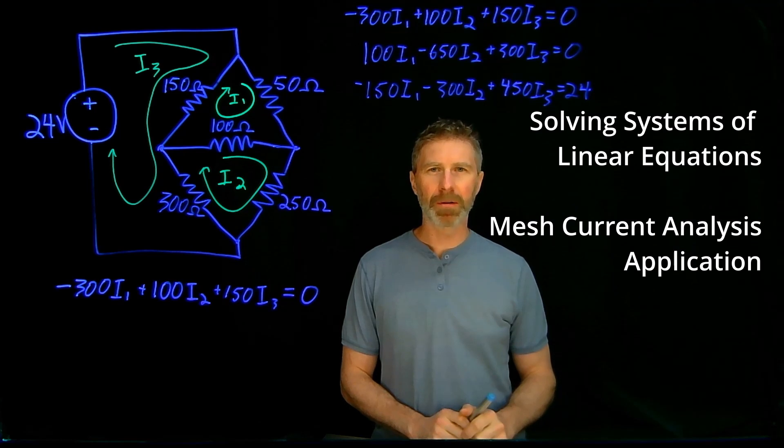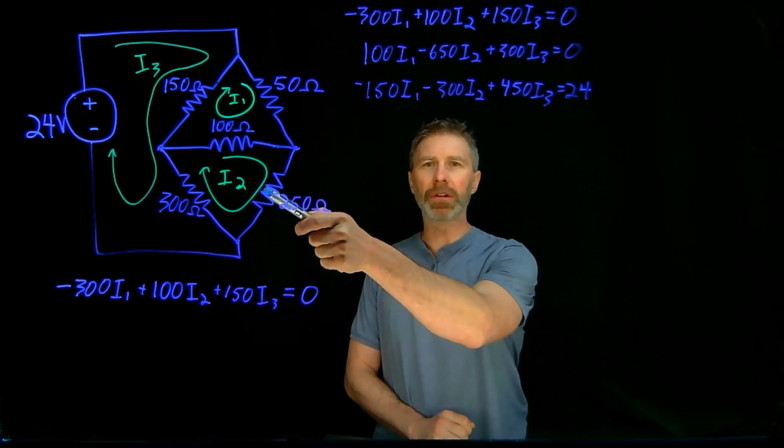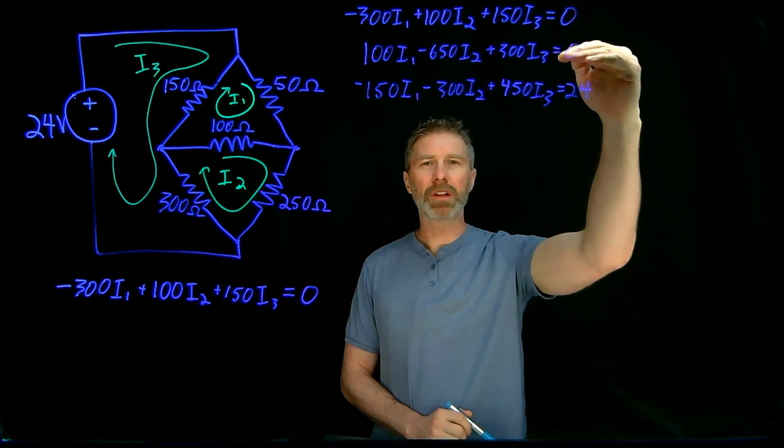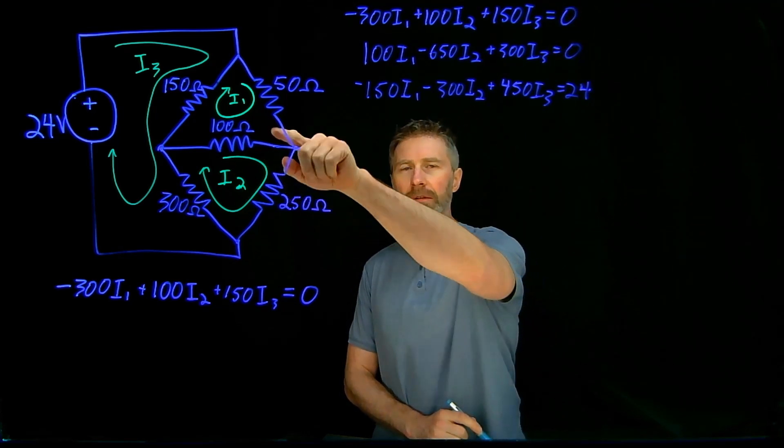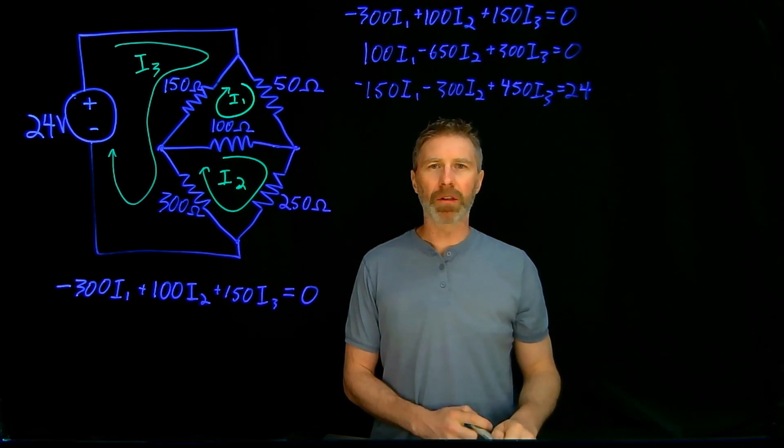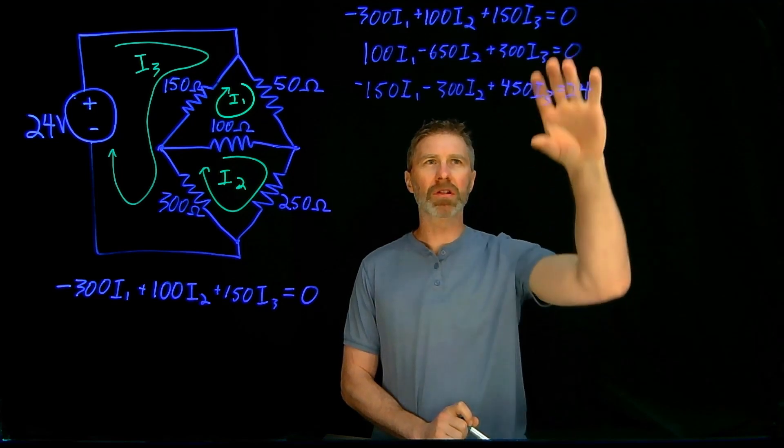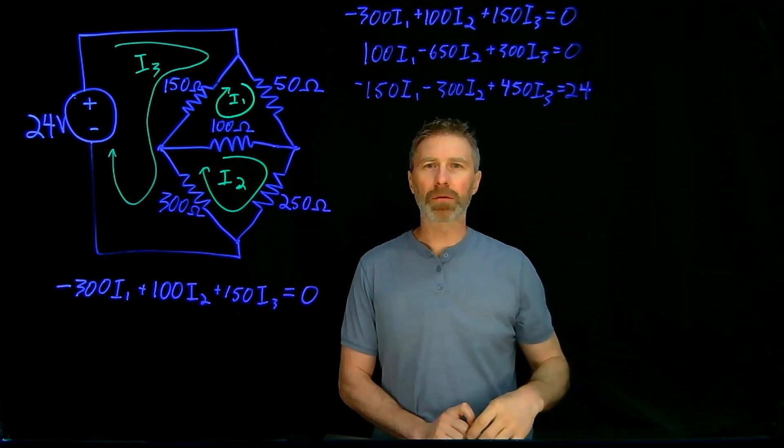Hey, welcome to the ElectronX Lab. In a previous video, I used mesh current analysis to look at this circuit here, and I used mesh current analysis to come up with three different equations that are in terms of the three currents of the current loops, I1, I2, and I3. Now in this video, I want to go through a few methods to show you how to solve this set of linear equations using different software tools.